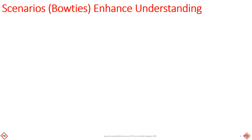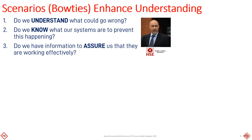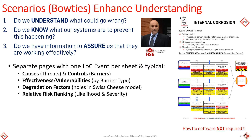Scenarios or bow ties enhance understanding. The UK HSE Buncefield inquiry challenged companies to ask themselves: Do we understand what could go wrong? Do we know what our systems are to prevent this happening? And do we have information to assure us that they are working effectively? Scenarios are summarized with one loss of containment event or bow tie sheet with causes or threats, controls or barriers, effectiveness and/or vulnerabilities by barrier type, degradation factors or holes in the Swiss cheese model, and relative risk ranking based on threat likelihood and release severity.